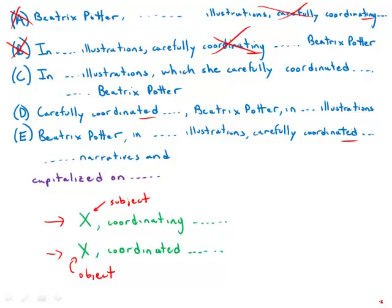In d, we have carefully coordinated and then the very next thing it touches is Beatrix Potter. Well, she's the subject. She's not the one being coordinated. So that's not correct.